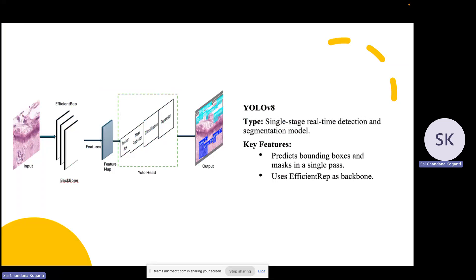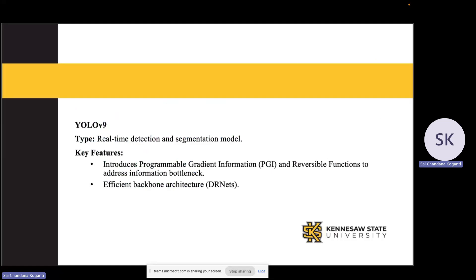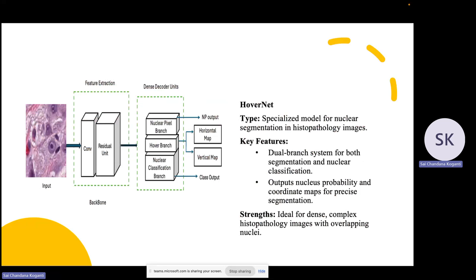Next is YOLOv9, another model in the YOLO family, which introduces enhancements like PGI — Programmable Gradient Information — and a reversible function to handle more information. Last but not least is HoverNet, a model specialized for dense and complex histopathology images. It has a dual-branch design for both segmentation and nuclear classification.